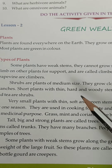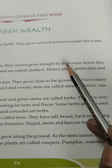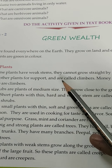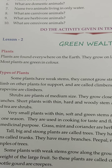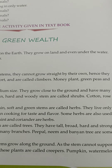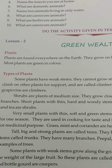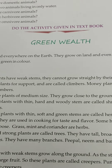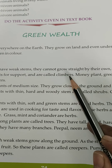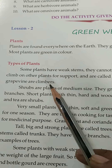Types of plants. Some plants have weak stems and cannot grow upright by their own. Hence, they climb on other plants for support and are called climbers. For example, children: money plant, green peas, and grapevine are climbers.